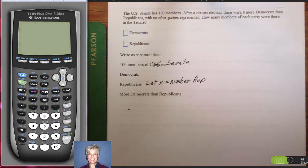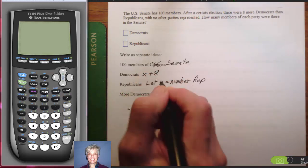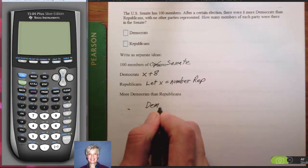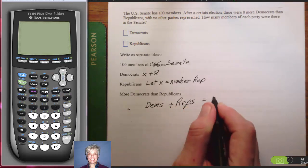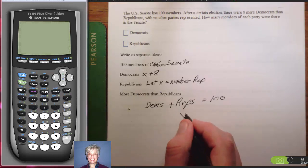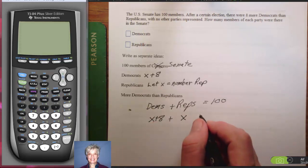Well, if there are X Republicans in the Senate this particular year that we're talking about, and there are 8 more Democrats than Republicans, there must be X plus 8 Democrats. And together, the Democrats, the Dems, let's call them the Dems, and the Reps, equal 100. This is not that hard, is it? Now, just substitute. We're letting X equal the number of Republicans. We're letting X plus 8 equal the number of Democrats. And we know that the two add up to 100.